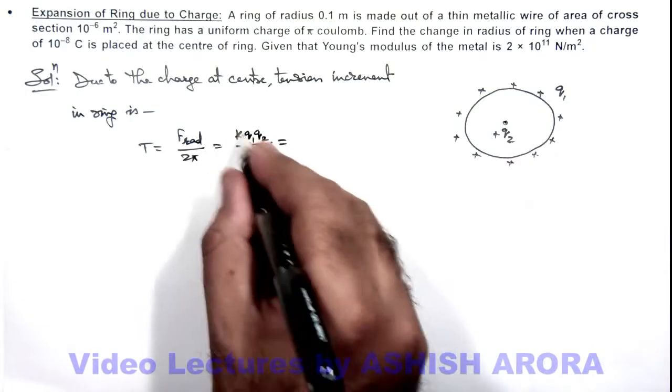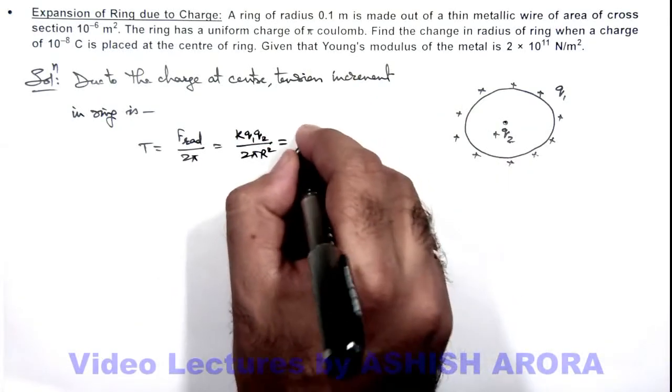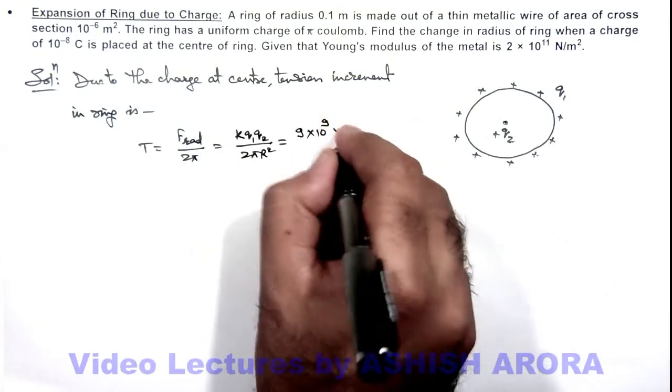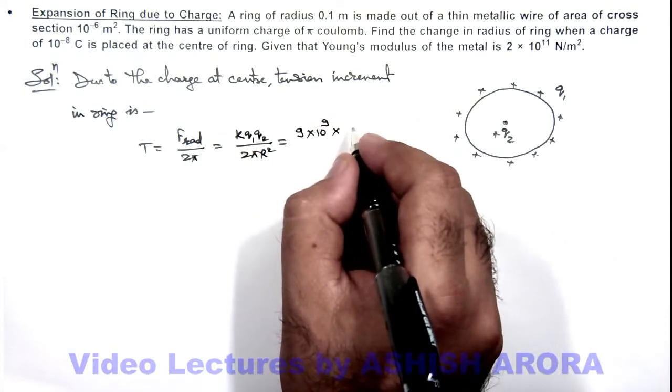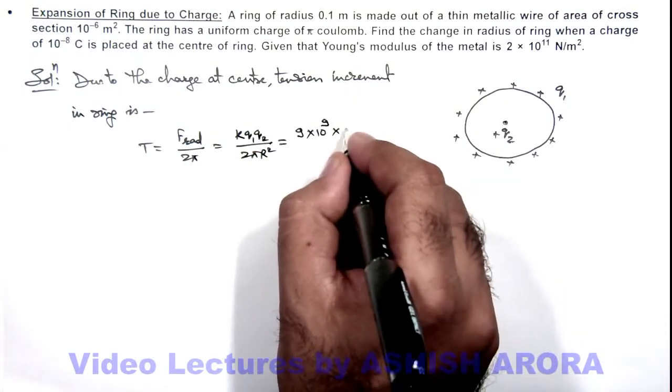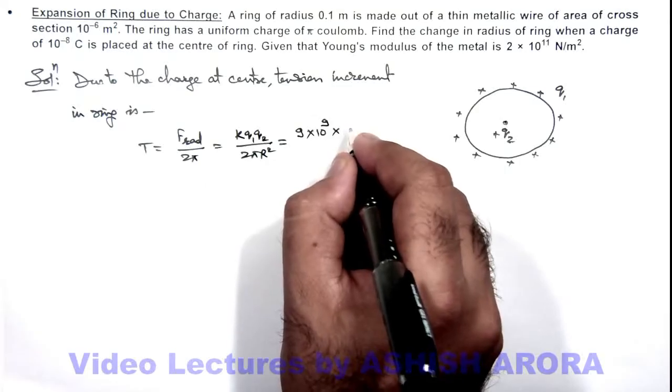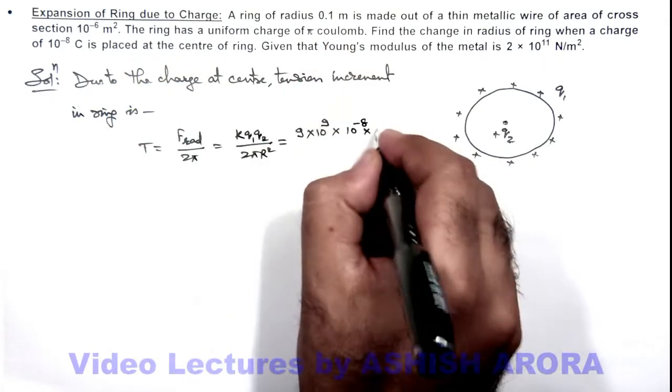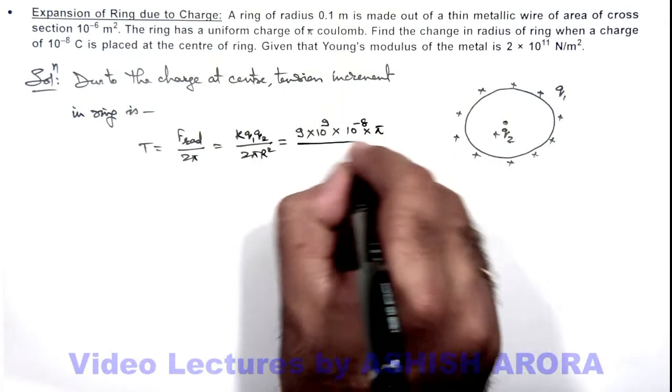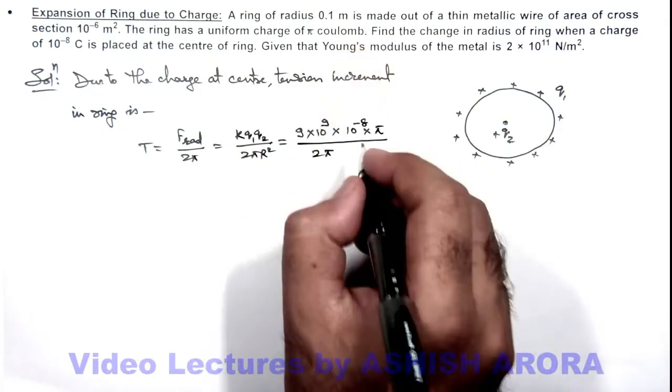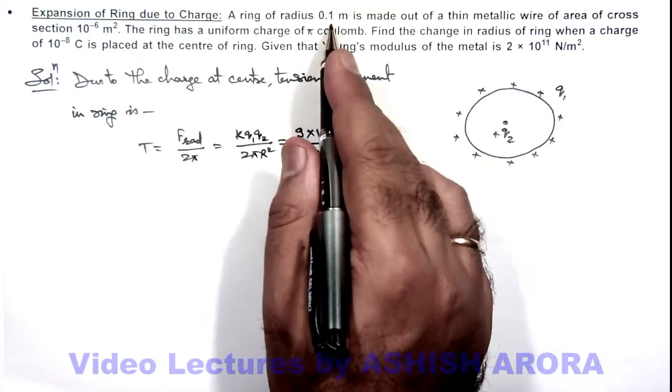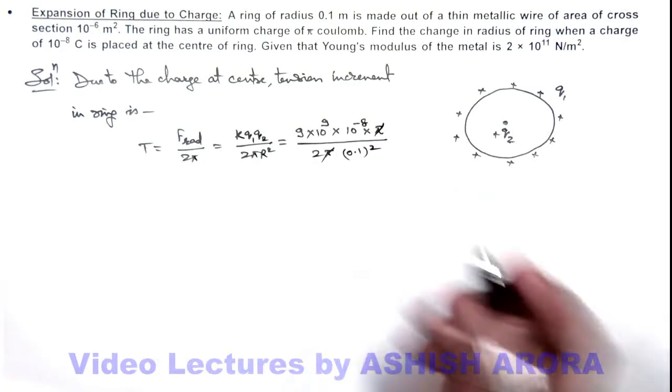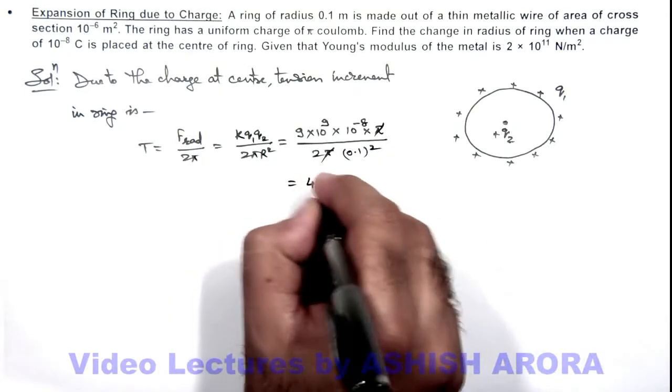If I substitute the numerical values which are given, this can be written as 9 multiplied by 10 to power 9, Q2 is 10 to power minus 8, Q1 is given as π coulombs, divided by 2π. The radius of ring is 0.1, so π gets cancelled out. If we simplify this result, this will give us 4,500 newton. That is the tension increase in the ring.